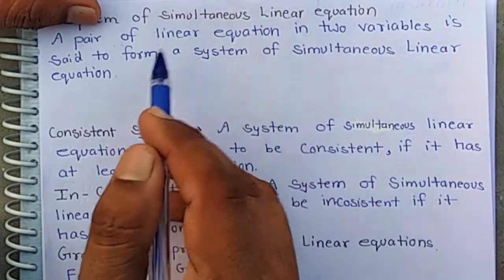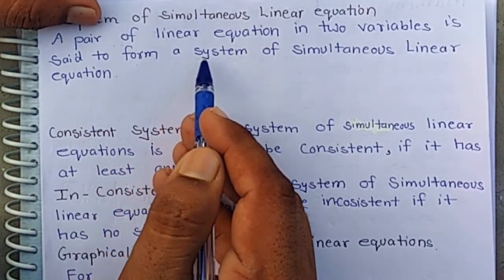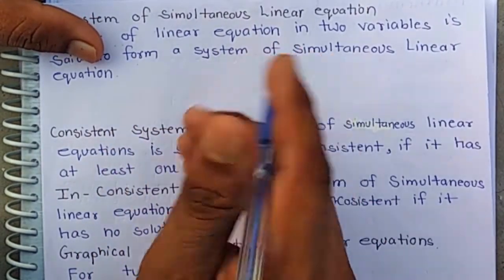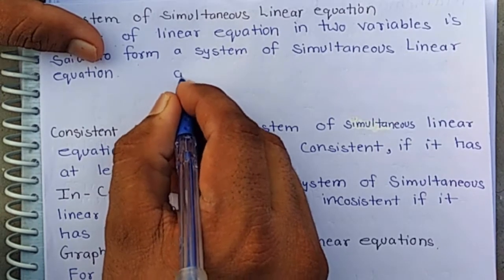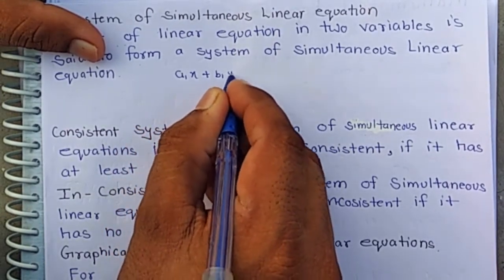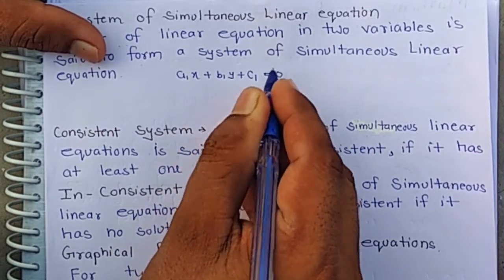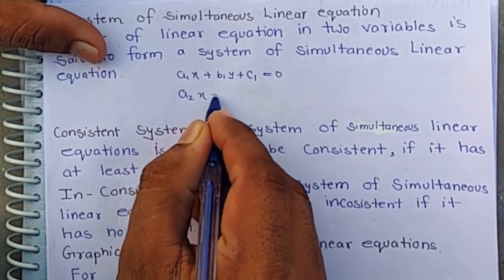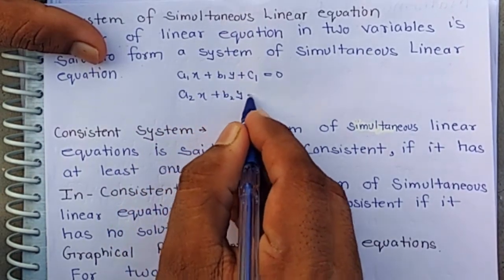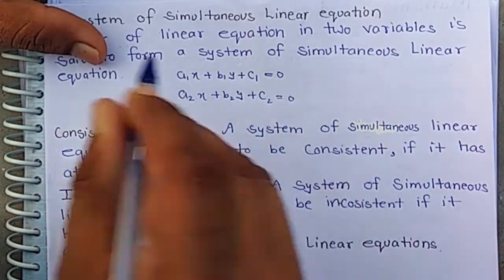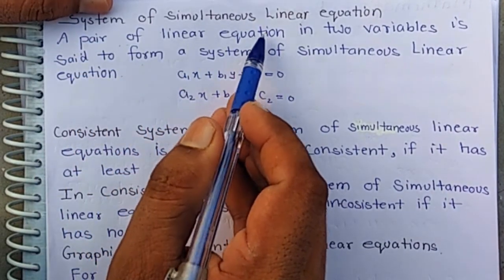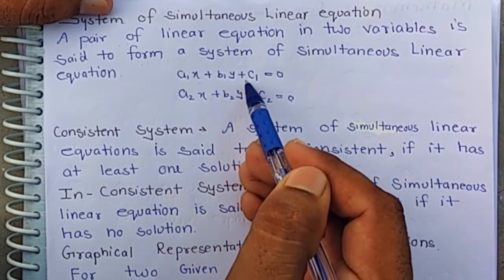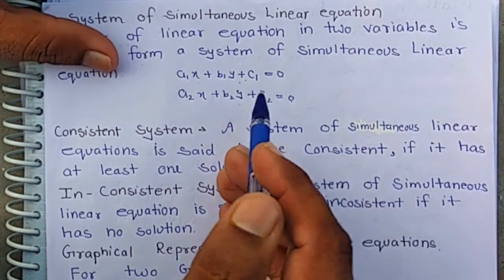A pair of linear equations in two variables is said to form a system of simultaneous linear equations. That means if there are two linear equations — the first is a1x plus b1y plus c1 equals 0, and the second is a2x plus b2y plus c2 equals 0 — then together they are called a system of simultaneous linear equations in two variables x and y.